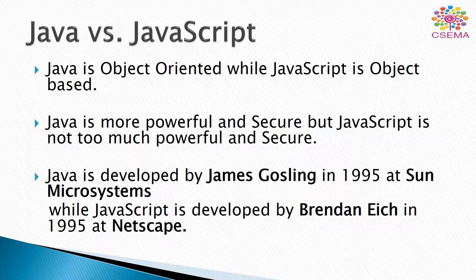Java is much more powerful and secure but JavaScript is not too much powerful and secure. Java is developed by James Gosling in 1995 at Sun Microsystems, while JavaScript is developed by Brandon H. in the same year at the Netscape Corporation.